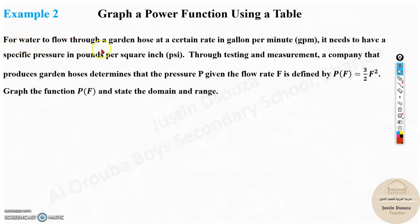For water to flow through a garden hose at a certain rate in gallons per minute, a garden hose is basically like a pipe which is used to water the plants, the main pipe which is used for gardening.